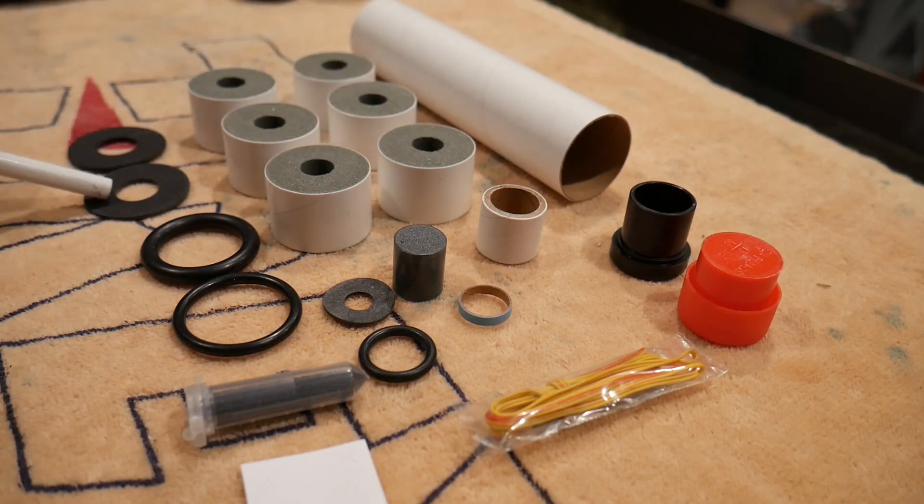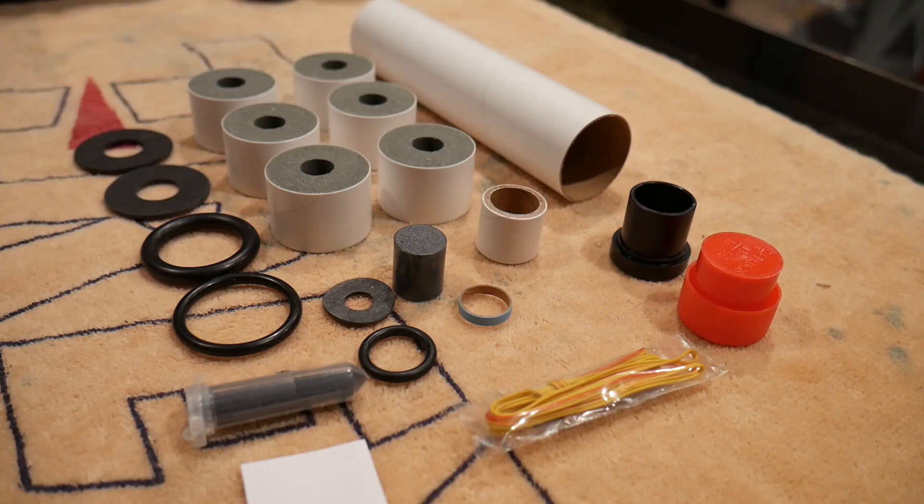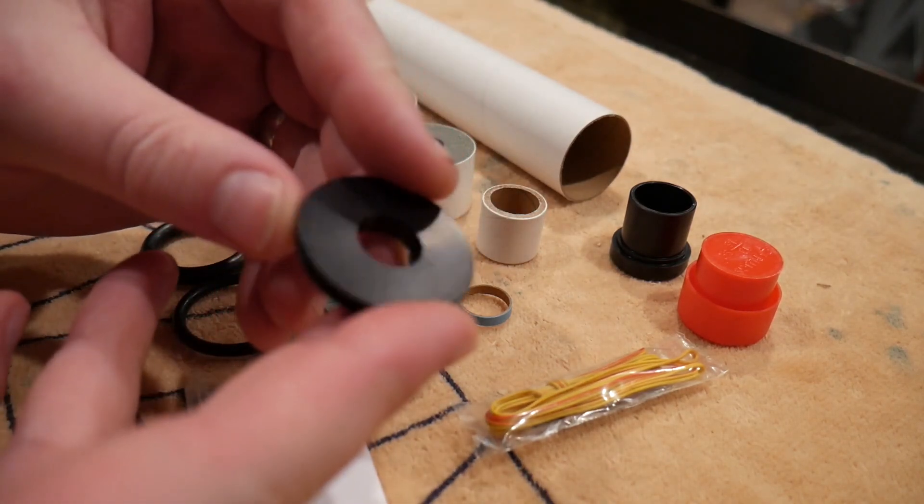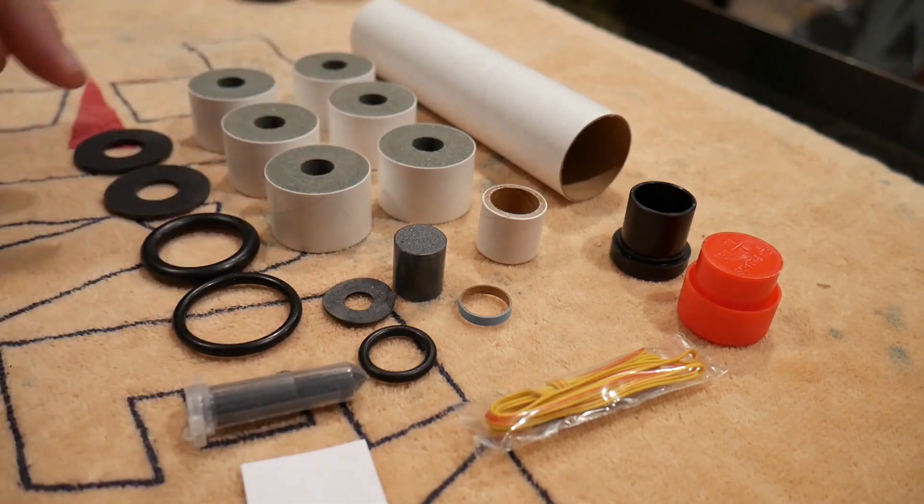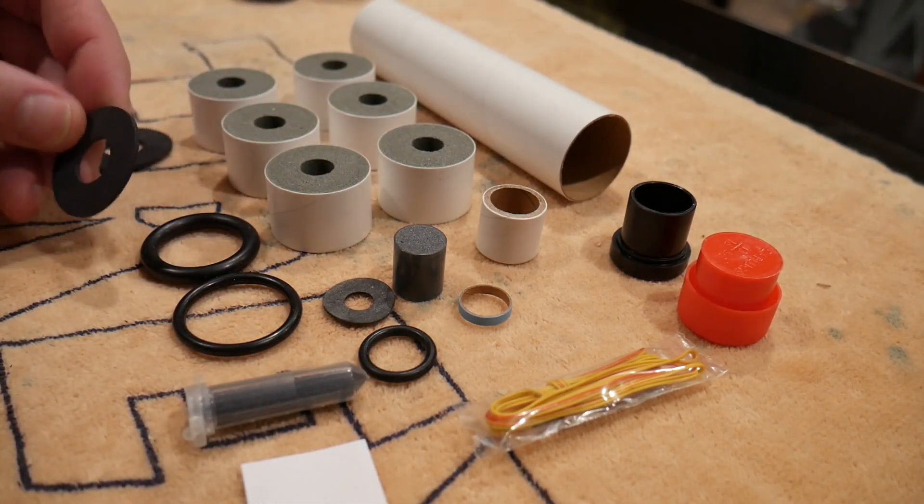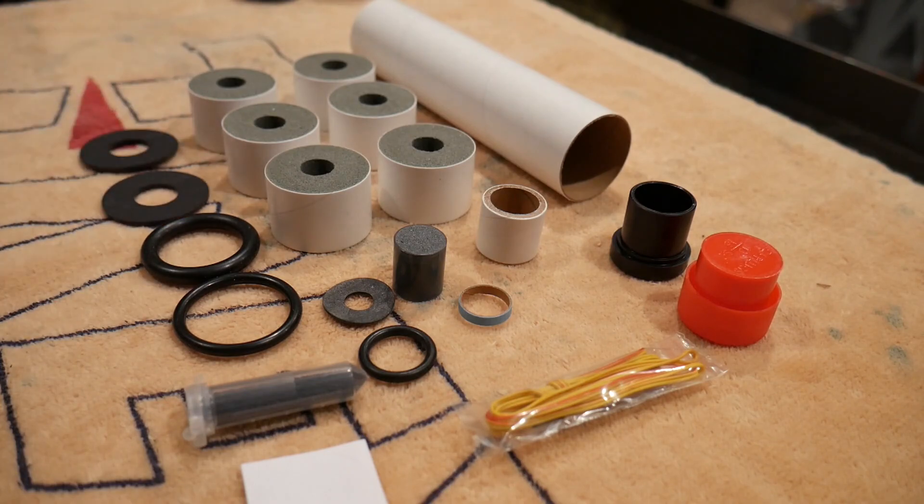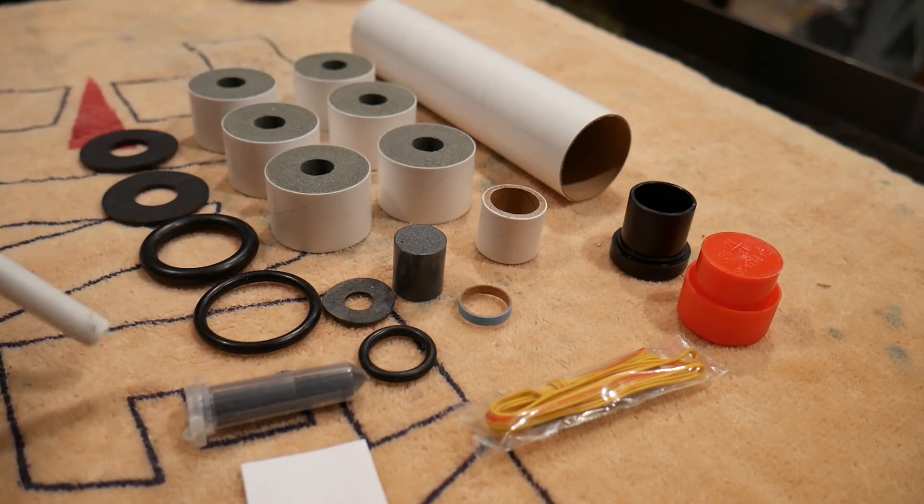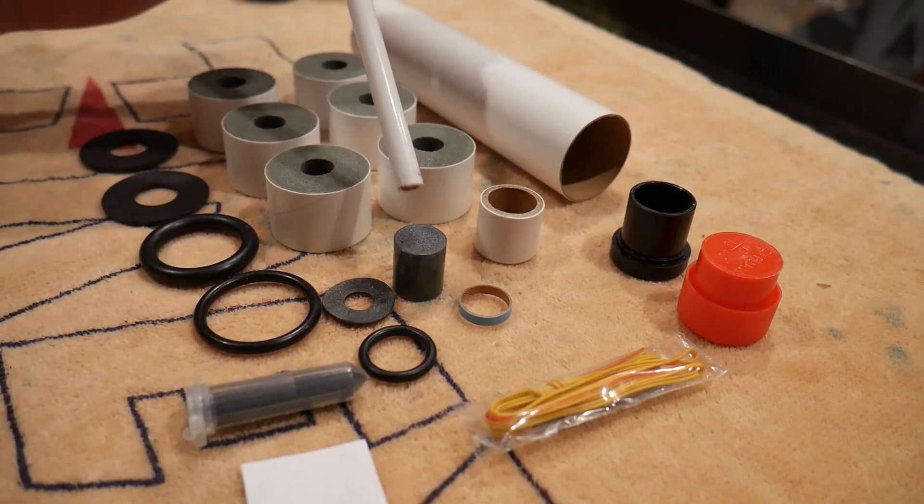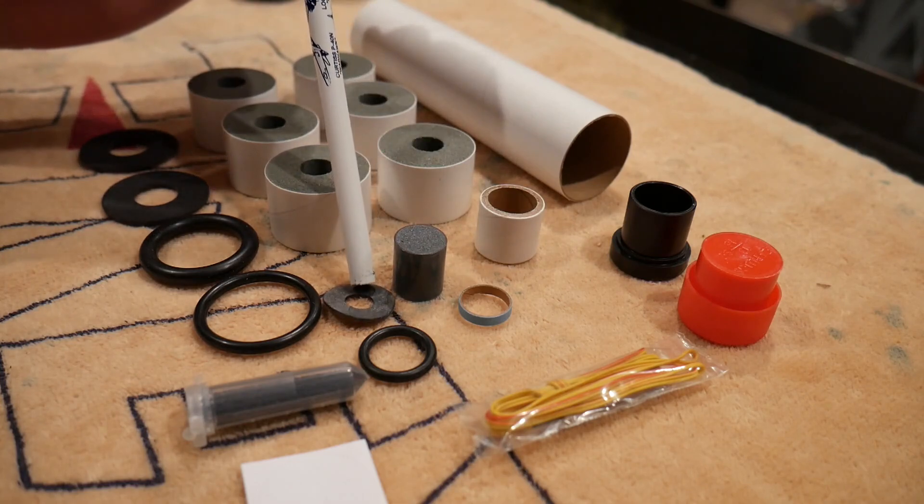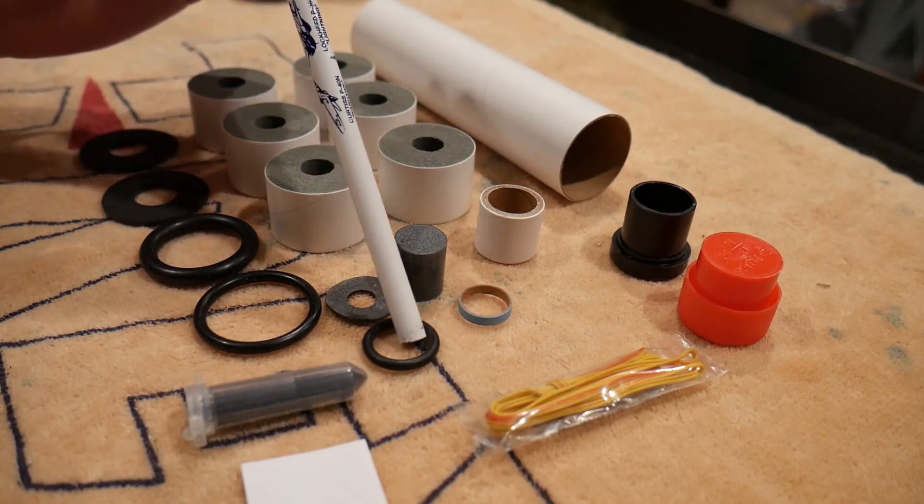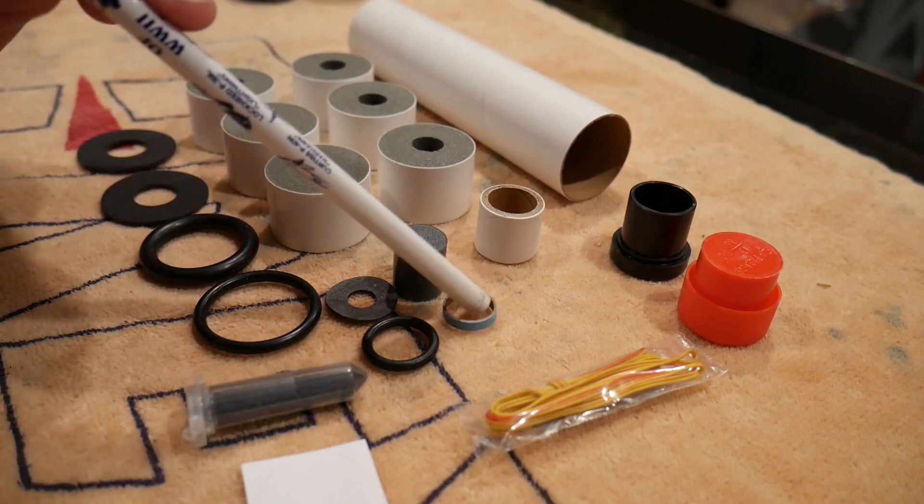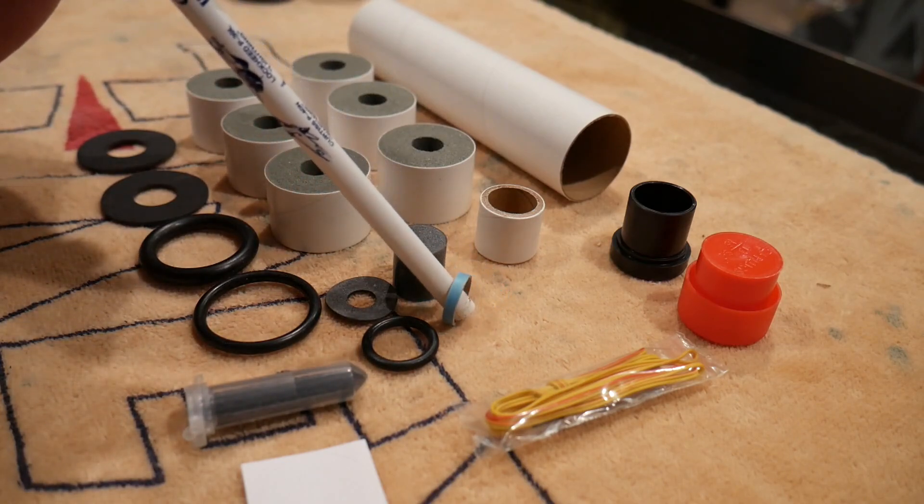Our forward and aft seal discs here—take note because certain reload kits will use this machined aluminum seal disc version depending on the propellant load, might use this instead of these fiber seal discs, so pay close attention. We have our aft and forward o-rings. We have our delay grain sleeve here and the delay grain itself. The forward neoprene delay spacer, and then the delay o-ring here.